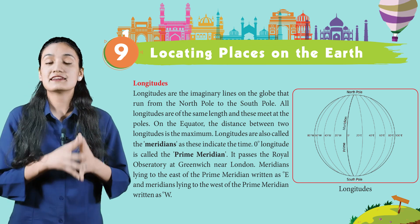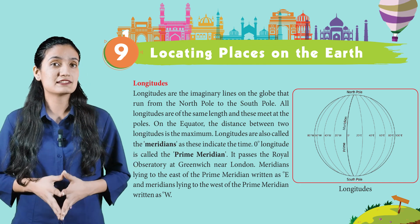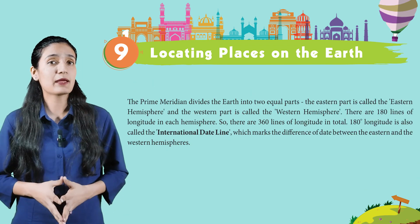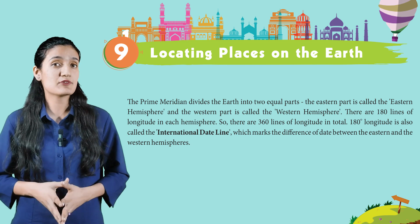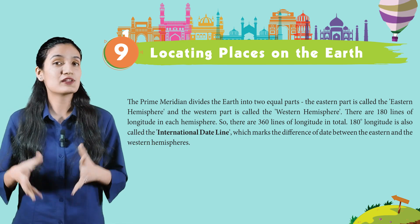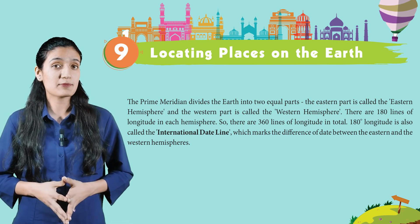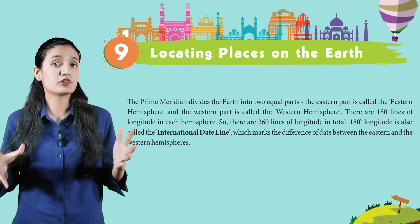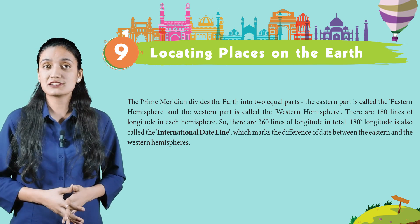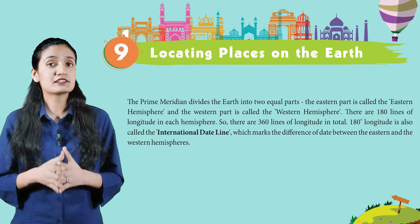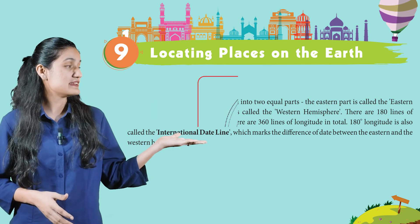The Prime Meridian passes through the Royal Observatory at Greenwich, near London. Meridians lying to the east of the Prime Meridian are written as degrees East, and those to the west are written as degrees West. The Prime Meridian divides the Earth into two equal parts — the Eastern Hemisphere and the Western Hemisphere. There are 180 lines of longitude in each hemisphere, so there are 360 lines of longitude in total. The 180-degree longitude is also called the International Date Line, which marks the difference of date between the Eastern and Western Hemisphere.